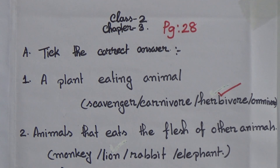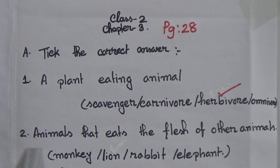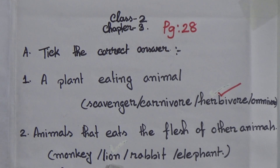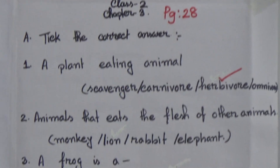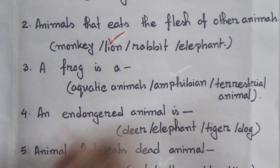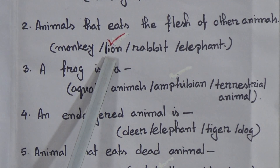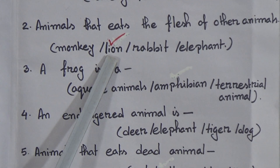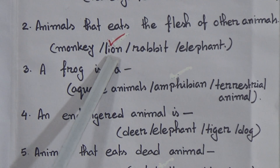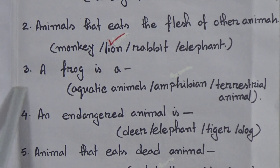Number two: an animal that eats the flesh of other animals. Dear students, the lion eats the flesh of other animals, so you have to put a tick mark on lion. The answer to number two is lion.